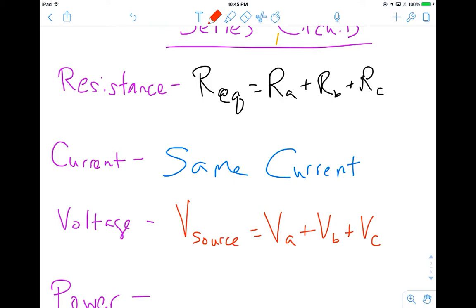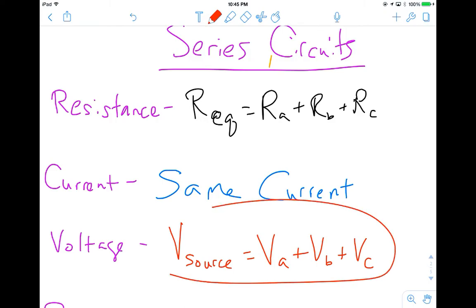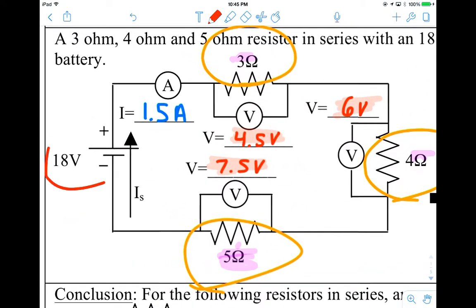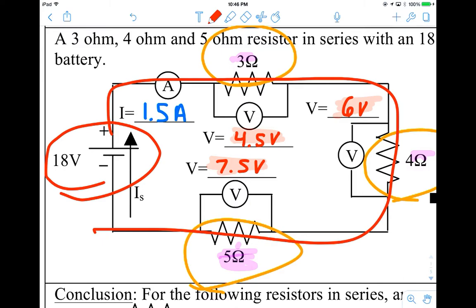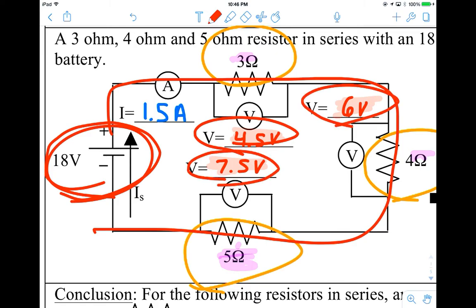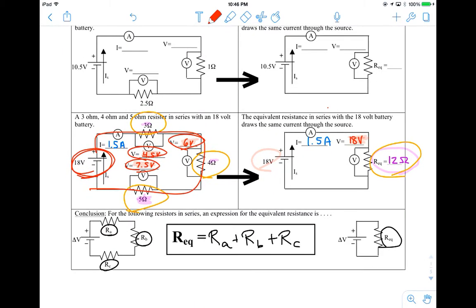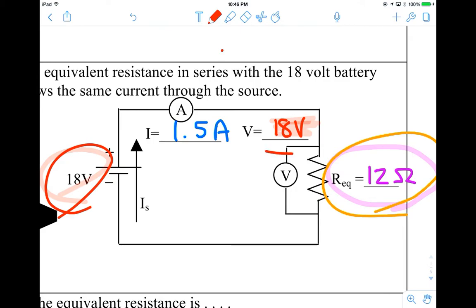We can see those parallels clearly. The battery is the thing that gives you the push — it provides the energy that allows current to flow. The resistors use up that energy, that push. In other words, the battery push generated by the battery is completely used up as electrons flow through the circuit. The battery generates 18 volts, and the resistors all dissipate those voltage drops. Same thing on the equivalent side: the battery generates 18 volts and the single resistor uses up all 18 volts.